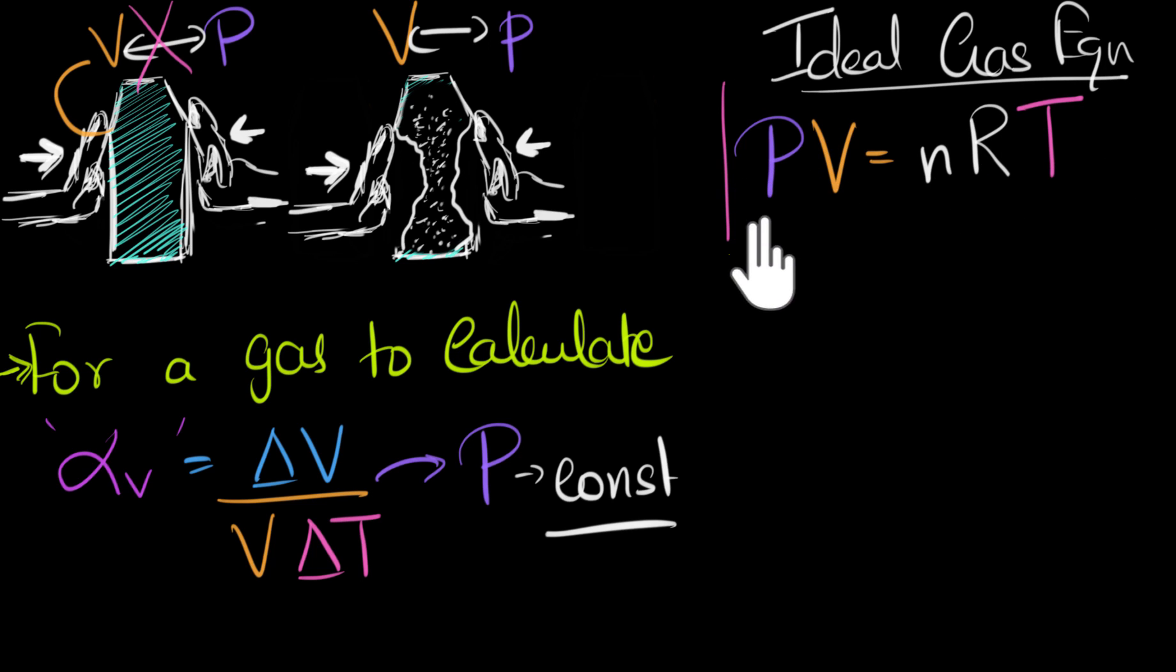Now, in reality, most real gases don't obey this equation, but they come pretty close to this. Almost all gases, under certain conditions, come pretty close to obeying this equation. And so we can approximate almost all our gas as an ideal gas, and then figure out what is the alpha V value for such an ideal gas.